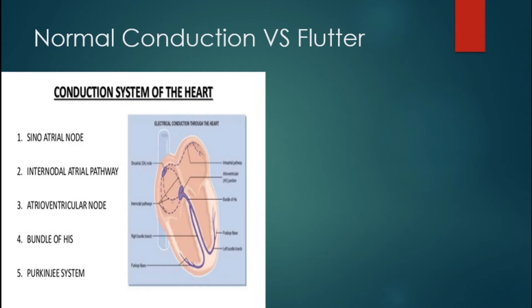Here are the normal conduction pathways inside the heart we should all remember from anatomy and physiology. The impulses start in the SA node and go to the AV node, down the His-Purkinje system. When the SA node is not operating as well as it should be, there are small sites in the atria called automaticity foci that serve as a backup plan. Each one of these can create impulses on their own, shown here in blue.